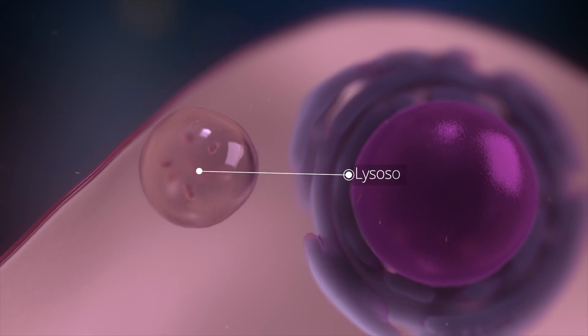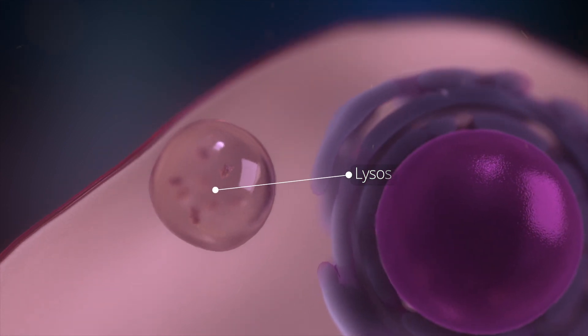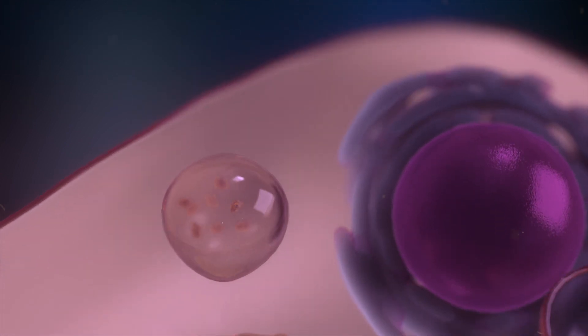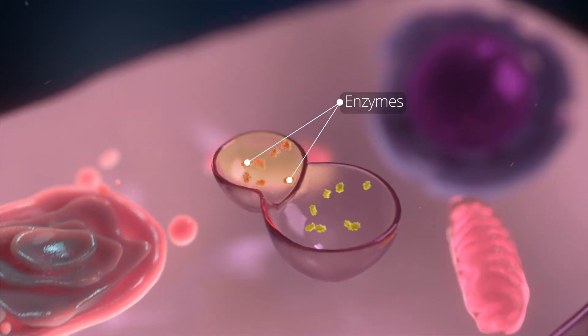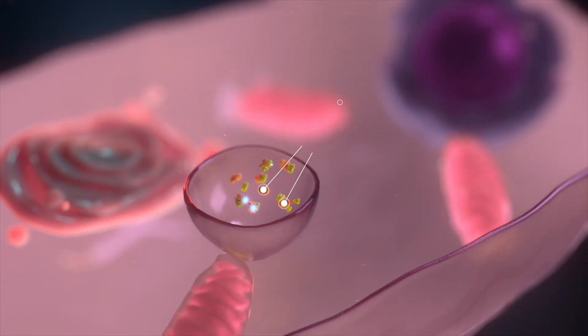One type of cell structure called a lysosome acts like a small recycling center. Lysosomes use special proteins called enzymes to help break down and recycle waste in the cells.